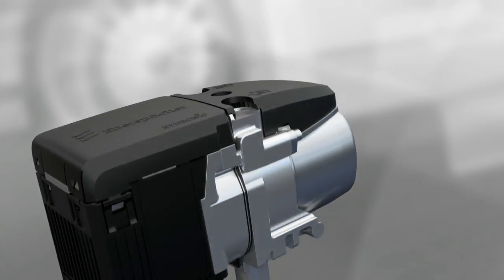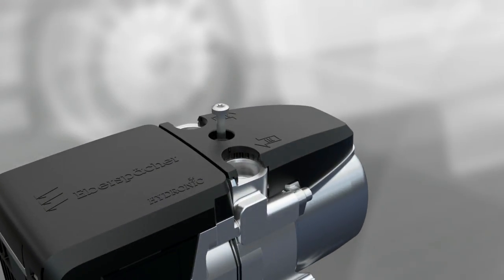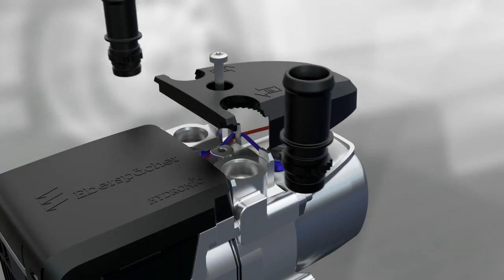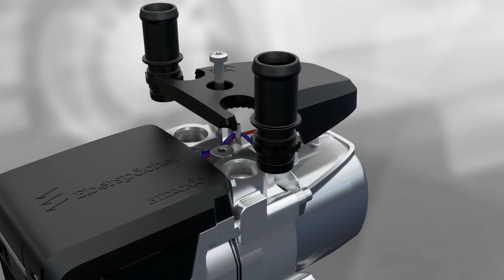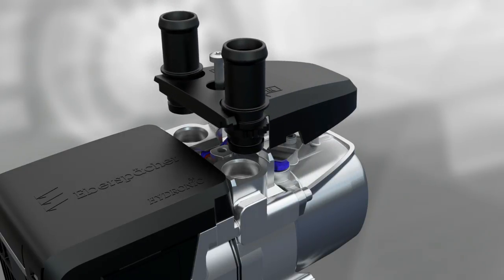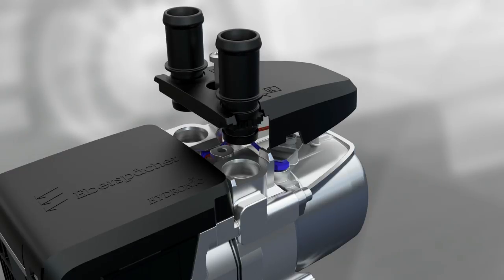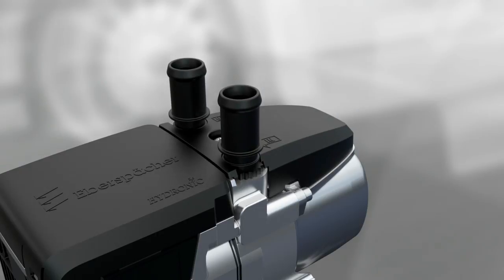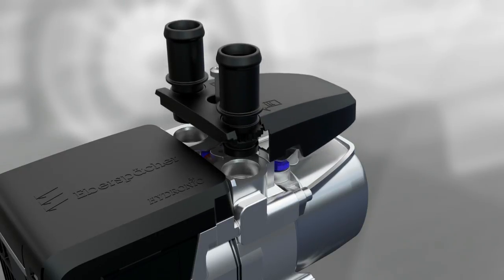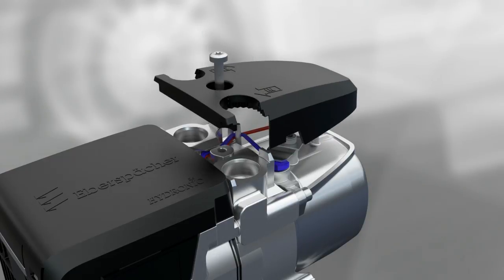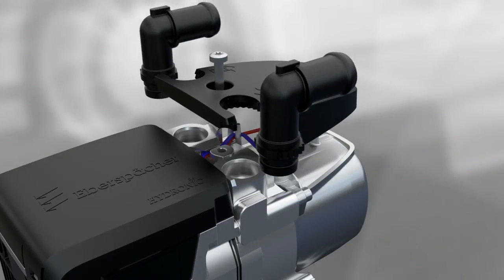The Hydronic S3 Economy also comes with two straight water connection fittings. You can also use angled rotating fittings to install the heater. First, remove the cover of the housing.